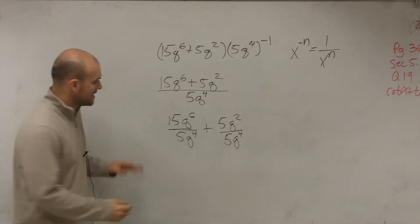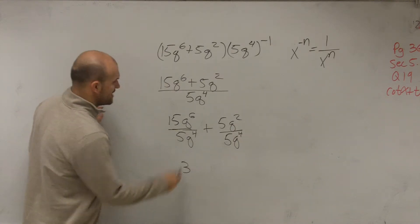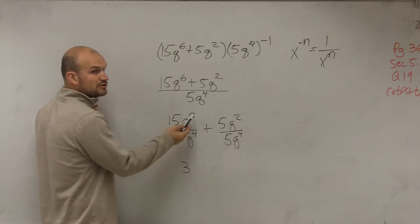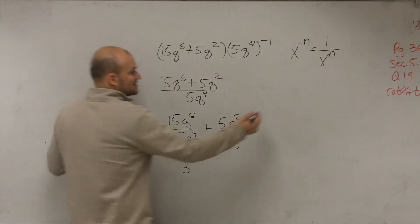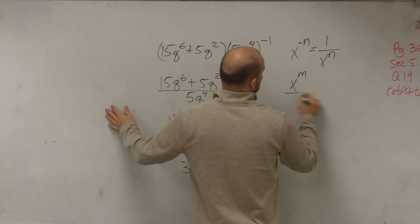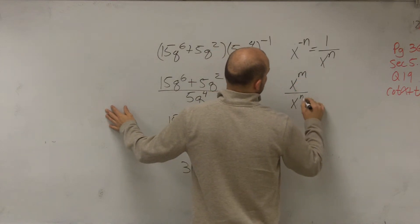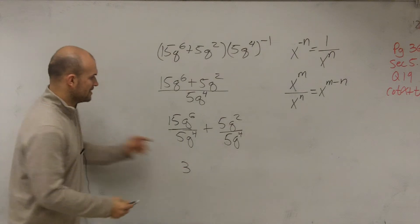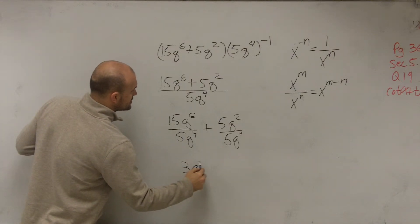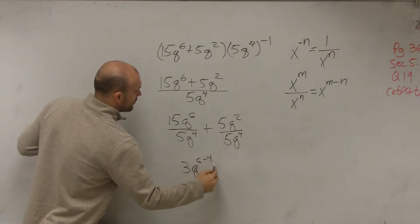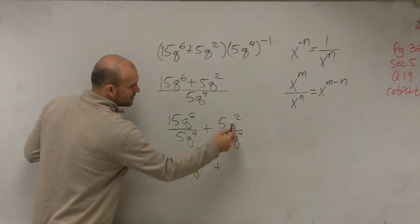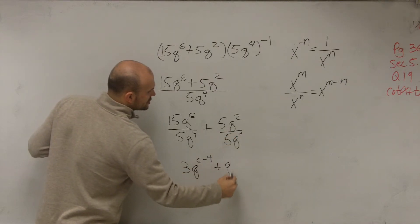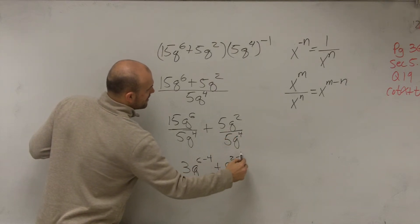15 divided by 5 is 3. And do you remember when you divide exponents? If you have x to the m divided by x to the n, that equals x to the m minus n. So this is 3q to the sixth minus 4, plus 5 divided by 5 is 1, and this is q to the 2 minus 4.